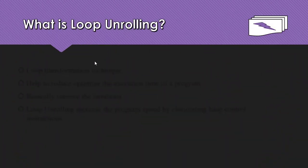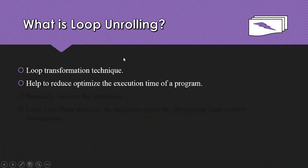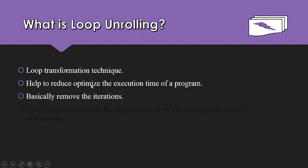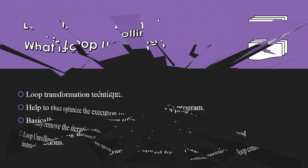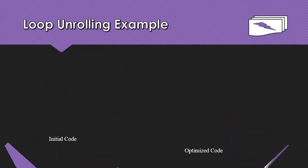Next is loop unrolling. This is a transformation technique that helps reduce the execution time of the program by removing loop iterations. It increases the speed of the program by eliminating the loop iterations given in the program.